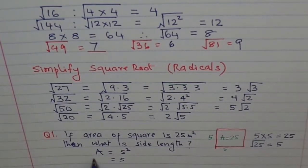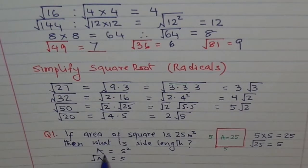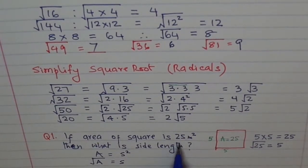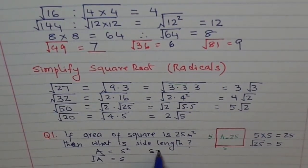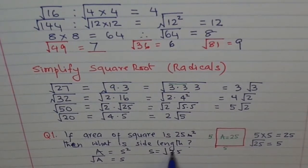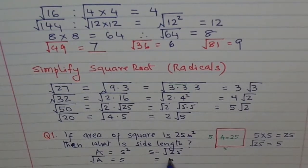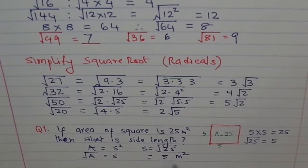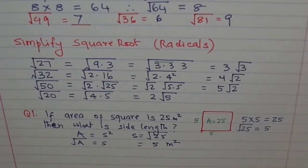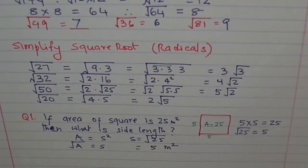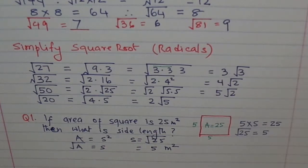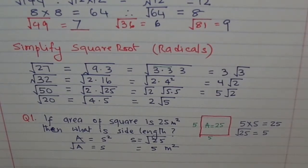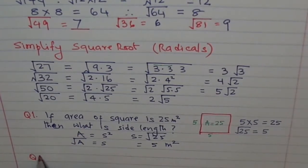The length of the side will be square root of A. A is 25. So we say side equals square root of 25, which is 5 meters. That is how we can solve our problem. Knowing the area of our square, we could find the sides of the square. This is a very common application where we use square root.